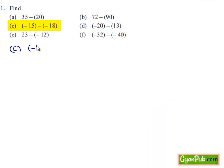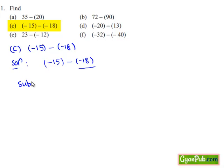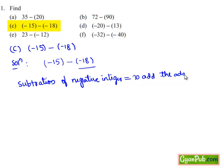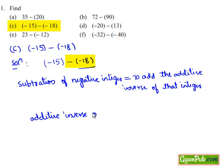Taking down part c: minus 15 minus of minus 18. Here we are subtracting a negative integer. Subtraction of a negative integer is nothing but adding the additive inverse of that integer. The additive inverse of minus 18 is plus 18. So we are adding plus 18 to minus 15.